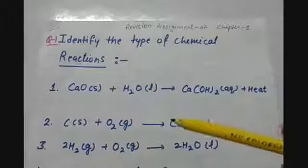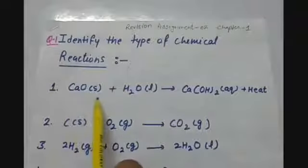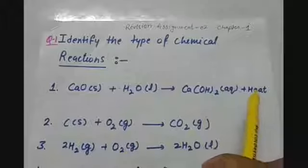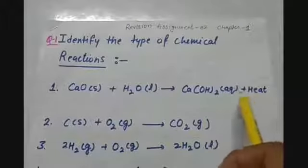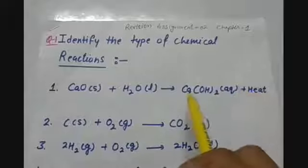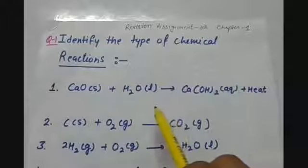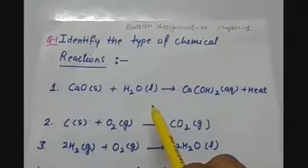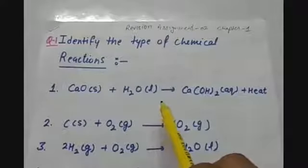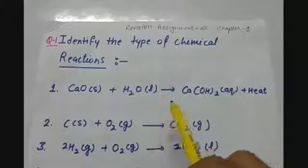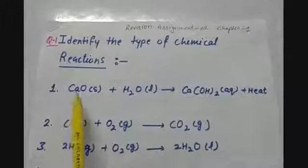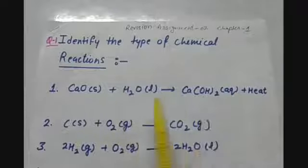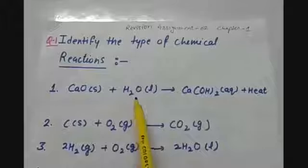The first equation is calcium oxide in solid form reacts with water and forms calcium hydroxide, and heat is involved. Although it seems that this is an exothermic reaction, we are not going to classify it on that basis. We have to identify whether this is a combination reaction, decomposition reaction, displacement reaction, double displacement reaction, or a redox reaction. Here calcium oxide is combining with water and forming a complex substance, so this reaction is a combination reaction.